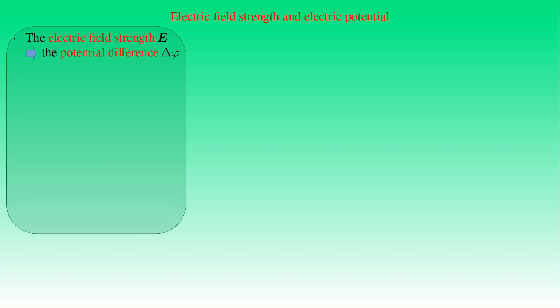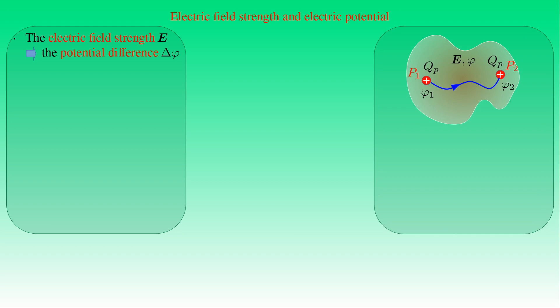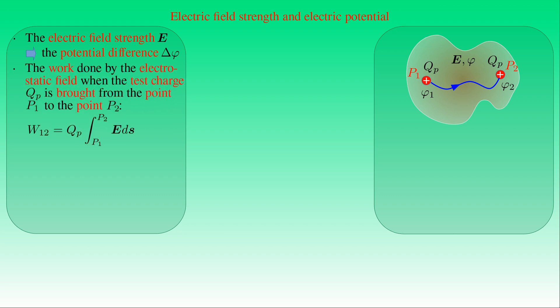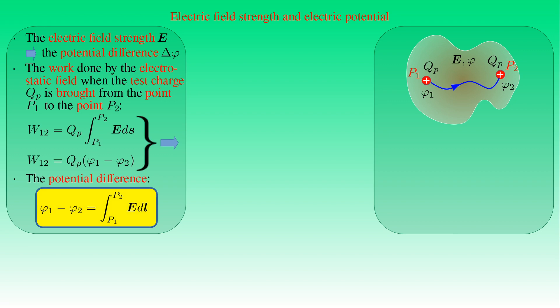There is a relationship between electric field strength and electric potential that allows us to determine one from the other. If we know E at every point, we can determine the potential difference Δφ across two arbitrary points. The work W from P1 to P2 can be written as QP times the line integral of E with respect to arc length S, or as QP times (φ₁ − φ₂). Since QP is arbitrary, the potential difference φ₁ − φ₂ equals the line integral of E along any curve from P1 to P2.